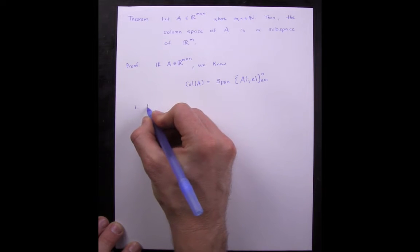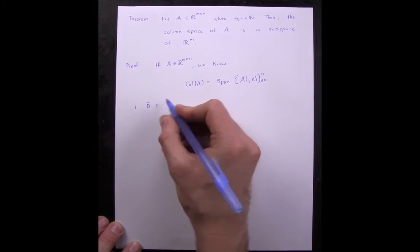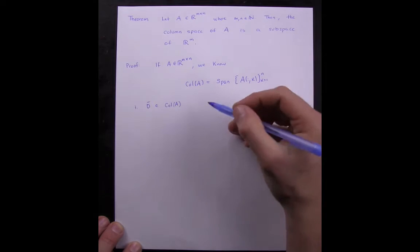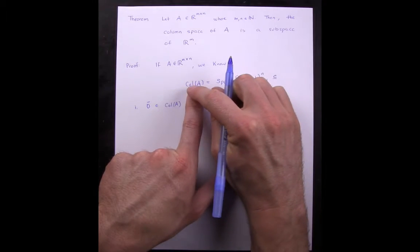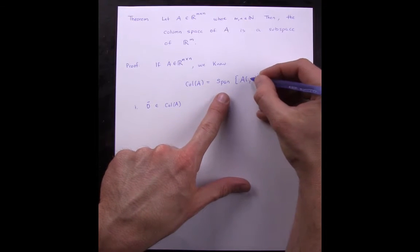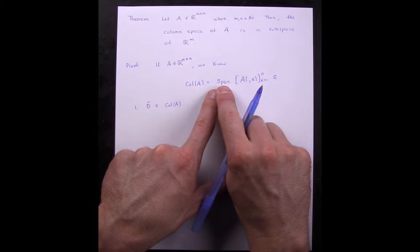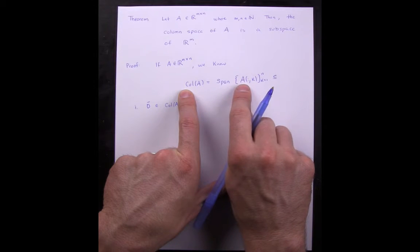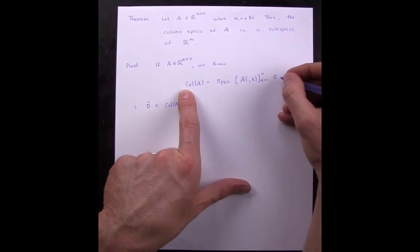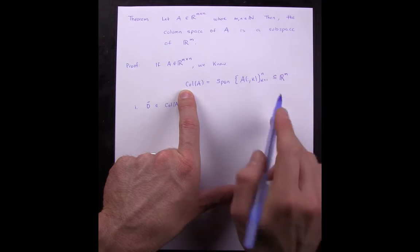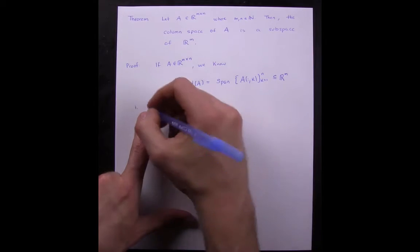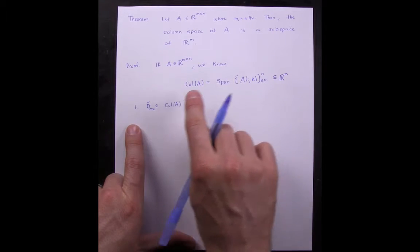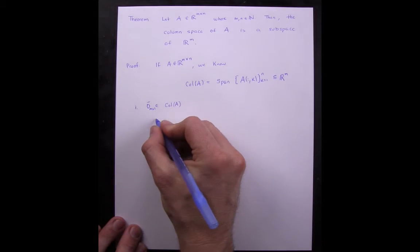Property 1: we want to show that 0 is an element of the column space of A. Note that every element in the column space is of size M by 1. By definition of the span, we know that each element of the column space is a linear combination of the columns of A, and the columns of A are M by 1. Therefore, every element of the column space must be of size M. So this 0 vector has to be of size M, and we want to know: is the 0 vector in the span of the columns?